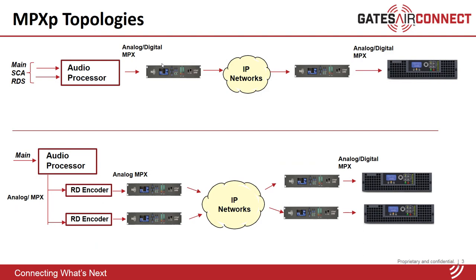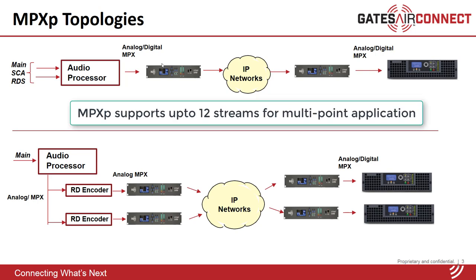This slide shows typical topologies for MPXP. For single point-to-point transport, the audio processor typically puts out a complete composite signal consisting of analog RDS and optionally SCA signals, which is transported across the network using a pair of MPXP codecs. The decoder outputs both analog and digital MPX signals simultaneously. For point-to-multipoint applications where each transmitter site needs different RDS information, the analog MPX output from the audio processor is fed into each RDS encoder, which mixes in the RDS signal and outputs a complete MPX signal to the MPXP encoder for transport across the IP network.